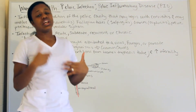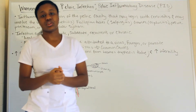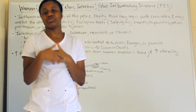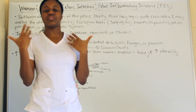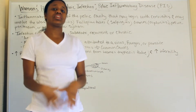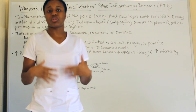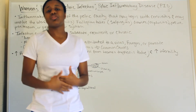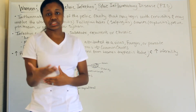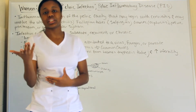PID also increases the risk of infertility. Women who have PID are at increased risk of infertility because it affects the reproductive system. If the reproductive system is not functioning properly, the woman may not be able to get pregnant.